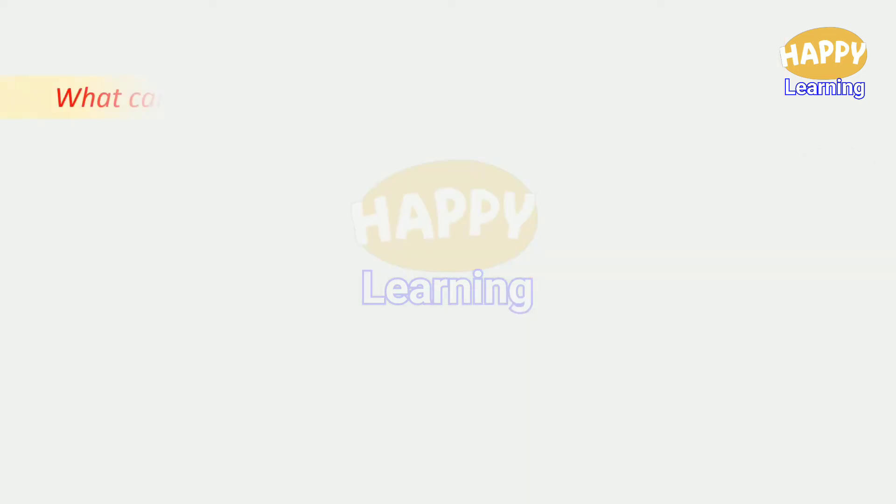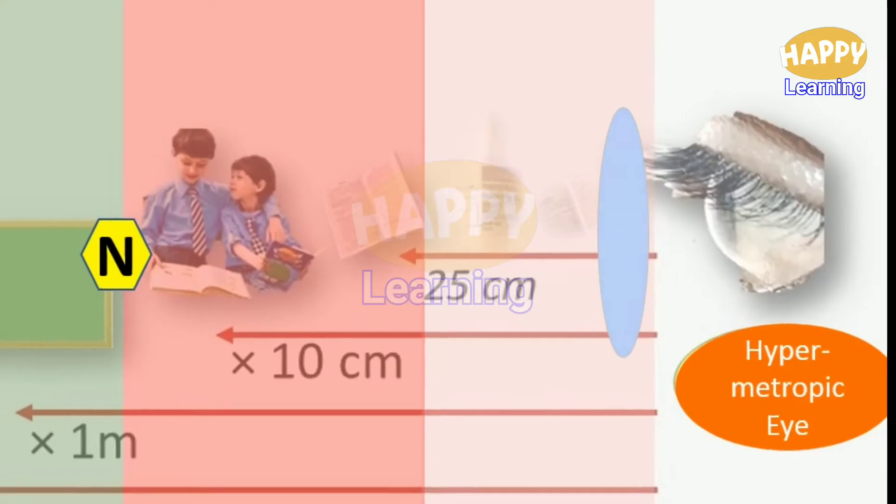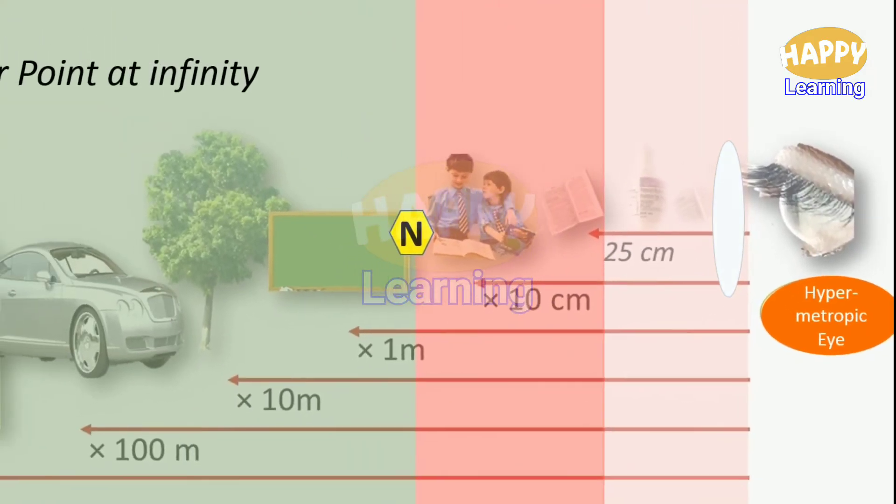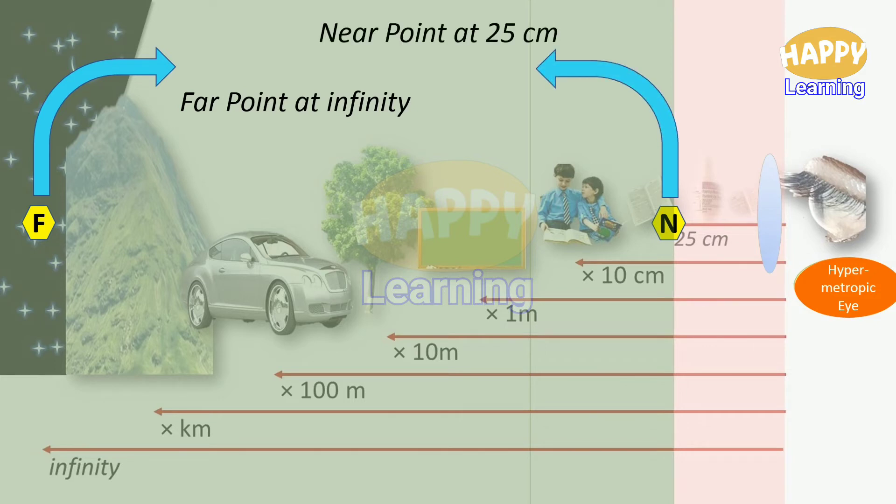What can we do to correct hypermetropia? We need to select a biconvex lens to correct hypermetropia. Here, a biconvex lens is introduced in front of the eye in the form of a spectacle, then the near point is shifted towards the eye.